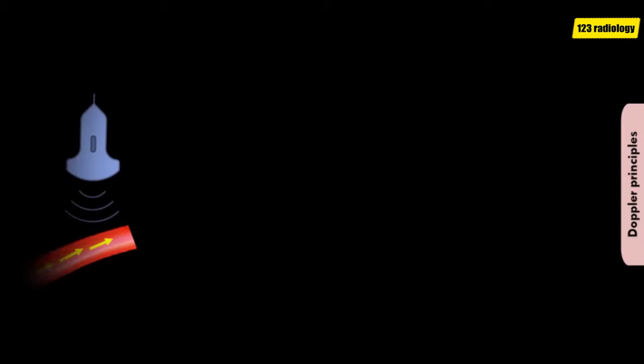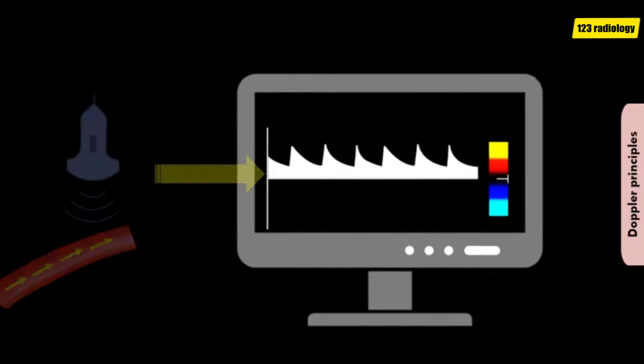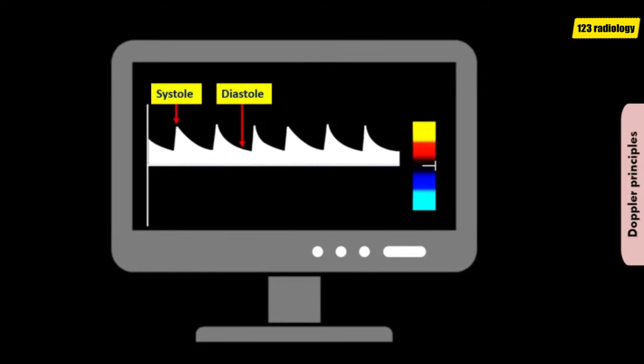Ultrasound beams are emitted from a transducer at a given frequency. When they hit a structure that moves, they are backscattered and a Doppler shift arrives to the transducer. The information is analyzed and represented as a waveform. The arterial waveform is characterized by systole and diastole.